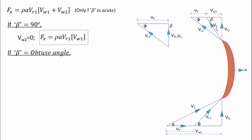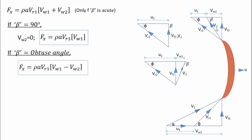And if the angle β becomes obtuse, the Vw2's direction flips and Vw2 becomes negative. And the equation becomes Fx = ρ·A·Vr1·(Vw1 - Vw2).